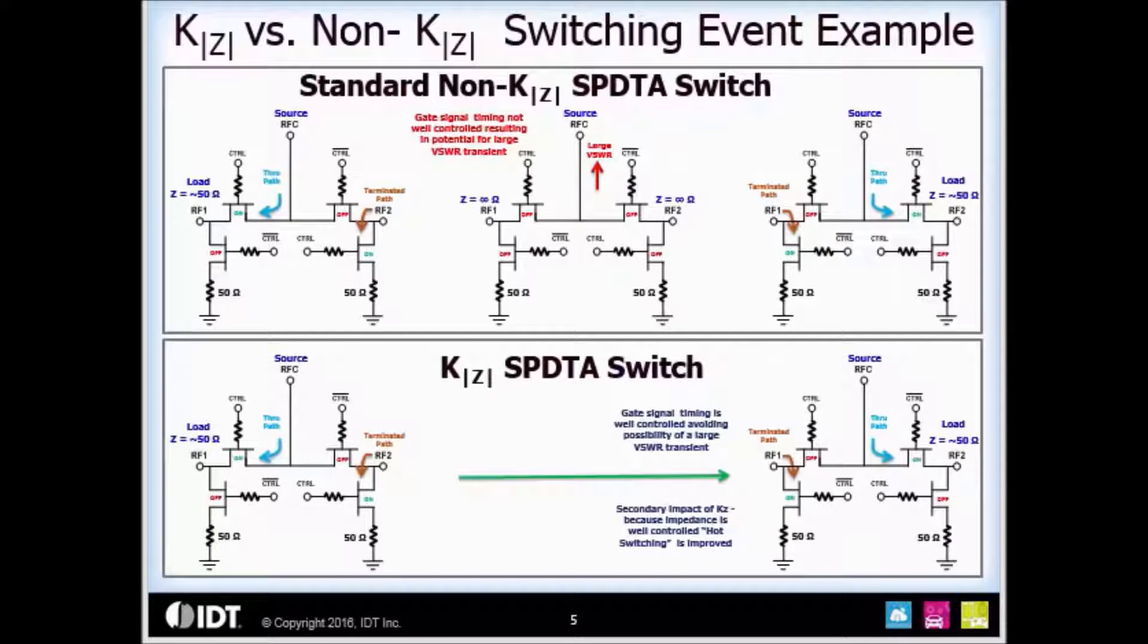To show how K|Z| works, I'll use an example of a single pull, single throw absorptive switch with and without K|Z| switching the RF common path to each of the RF output ports, RF1 and 2. For simplicity, I've shown a single stack switch FET in a series shunt configuration. Let's look at the top left drawing, the non-K|Z| or standard switch. The switch shows the RF signal path between RF common and RF1 with the unused RF2 path terminated to ground.